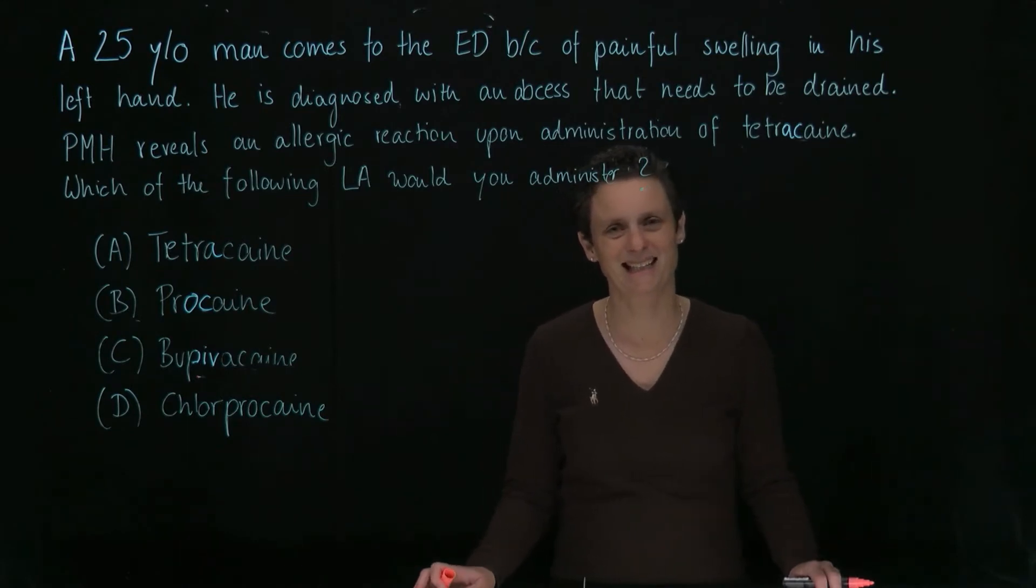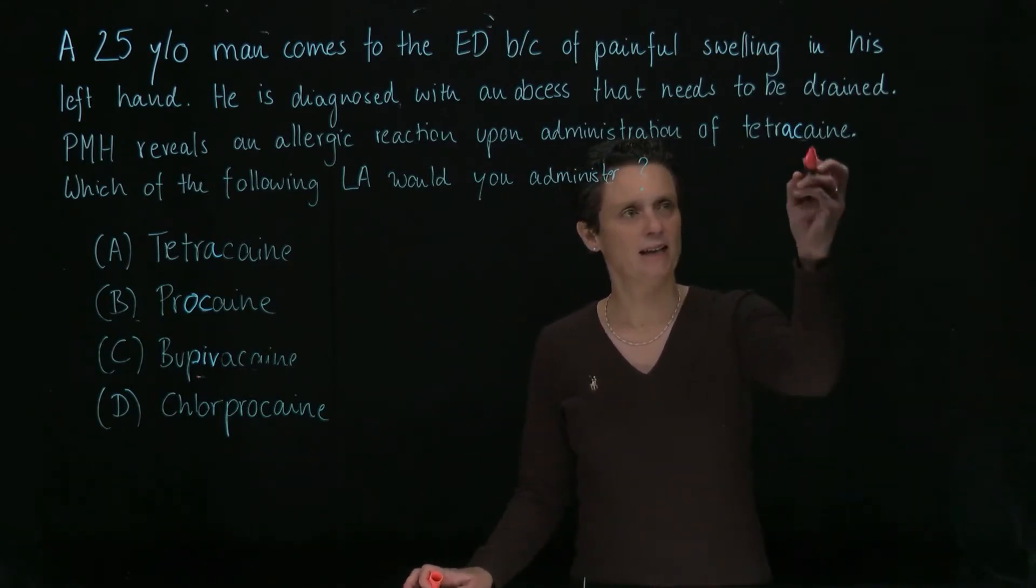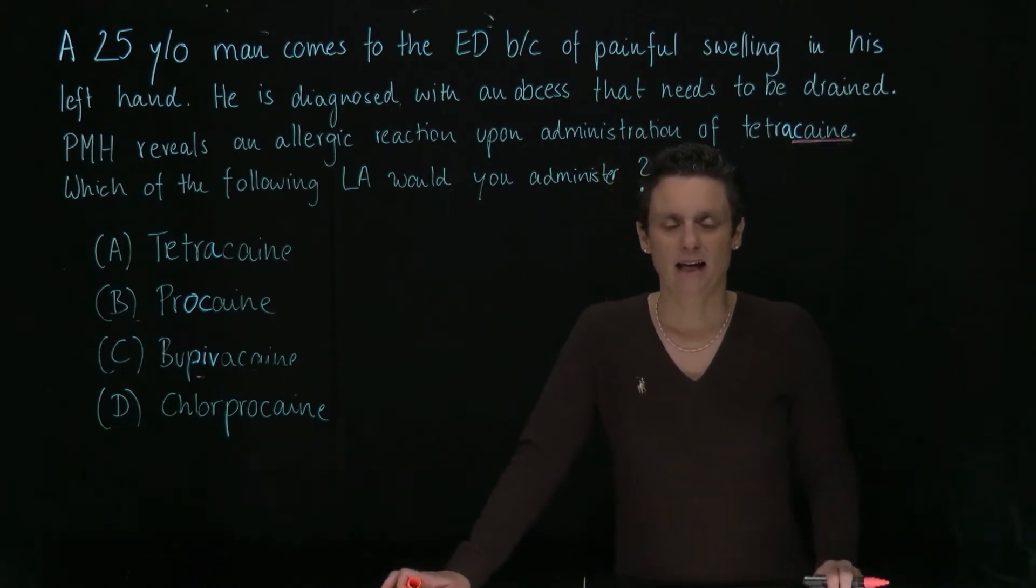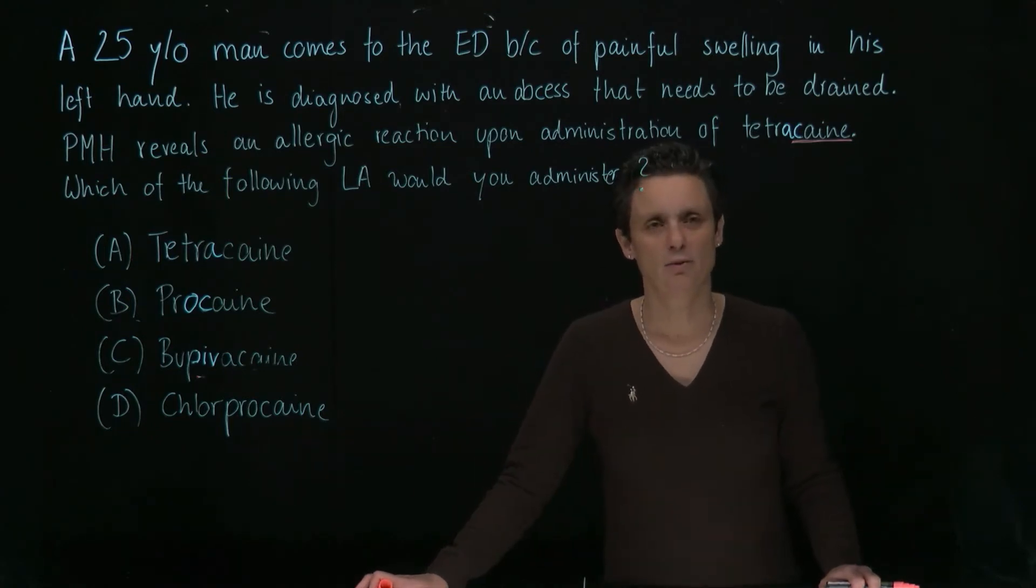So this is a question about local anesthetics. Remember, local anesthetics all end in caine and he already was once administered a local anesthetic and got an allergic reaction. So what do local anesthetics do? They block voltage-gated sodium channels.